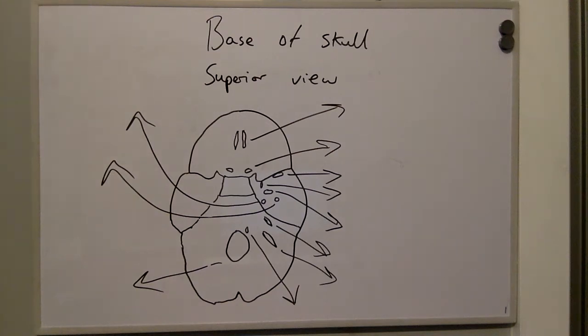This is a superior view looking down at the base of skull. It is a complex anatomical region made up of the ethmoid, sphenoid, occipital, paired frontal and paired temporal bones.